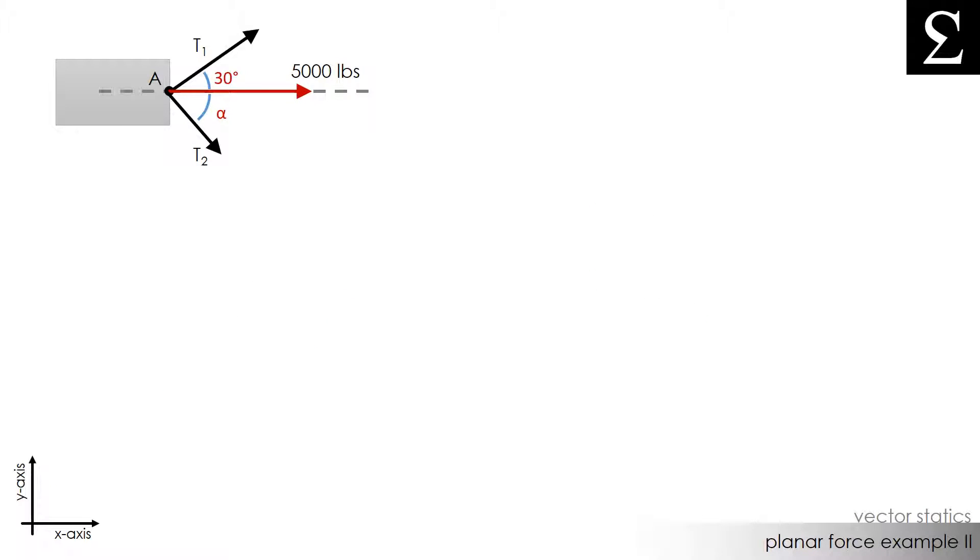The next part of this problem asks us what the value of alpha would be if the tension in rope T2 is at its absolute minimum. That means that at a certain angle alpha, the tension in rope T2 would be at its lowest value.